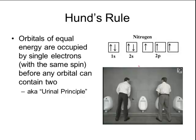The last rule is called Hund's rule. Hund's rule states that orbitals of equal energy levels are occupied by single electrons, all with the same spin, before any orbital can contain two. This is easier understood as the urinal principle. So if you imagine boys going into a restroom to use the bathroom.